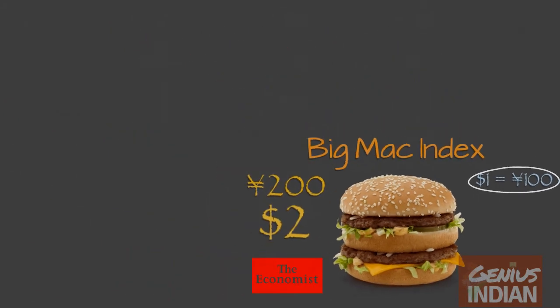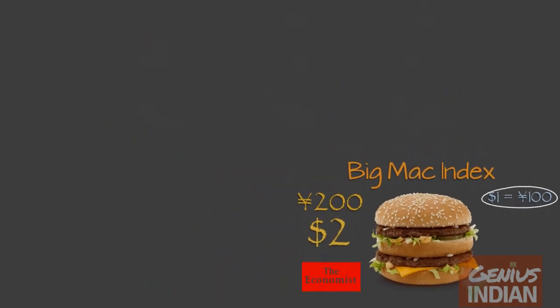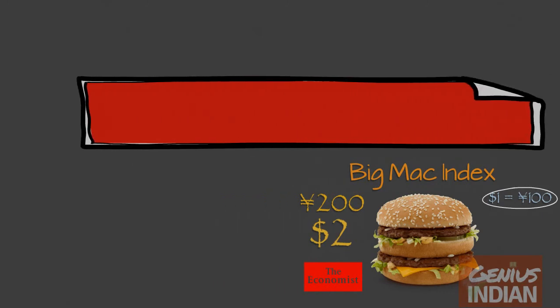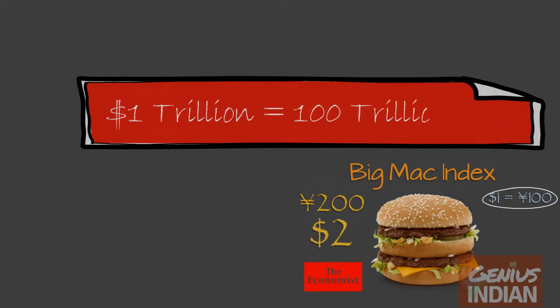Simultaneously, the Big Mac Index can also be used to adjust the value of their respective GDPs. Thus, if the GDP of Japan is 100 trillion yen, then its equivalent value will be 1 trillion US dollars.